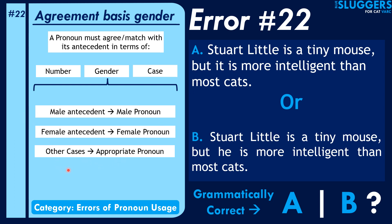The exception is: if the animal happens to be a really famous and well-known character, you would not want to use the pronoun 'it'. For example, in the sentence 'Stuart Little is a tiny mouse but it is more intelligent than most cats', 'it' has been used. However, Stuart Little is a famous fictional character, so you'd want to use 'he' — it's a male mouse.